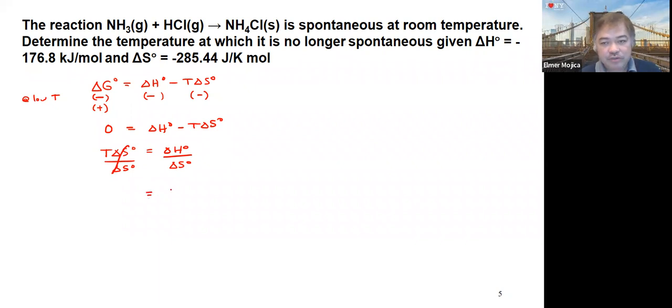You have to be careful with the units. You have here negative 176.8 kilojoules per mole, but the entropy given is 285.44 joules per mole. So we have to convert that by dividing with 1,000 joules per kilojoule. We cancel the joules, we cancel the moles, we cancel the kilojoules, and the unit that we have is just Kelvin.